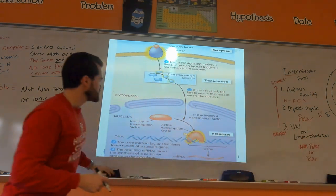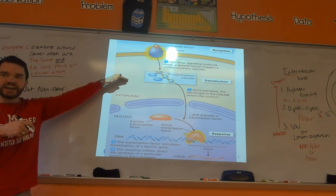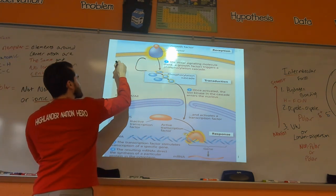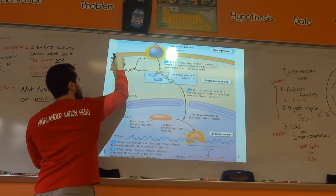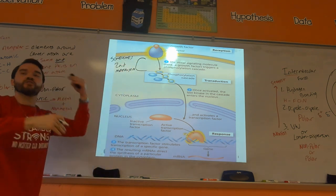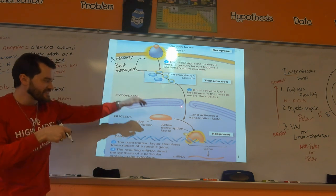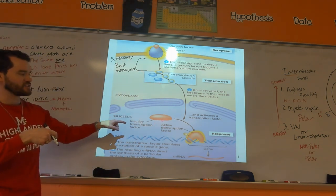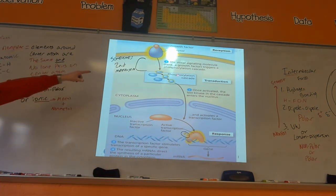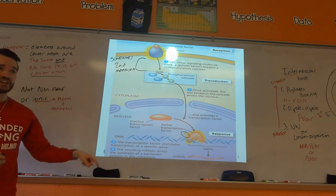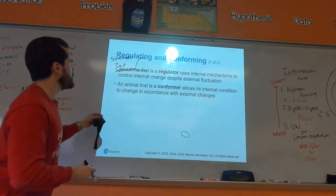Bringing it all together: a growth factor binds to a receptor, leading to a phosphorylation cascade — sometimes with second messengers inserted to further amplify the signal. The cascade activates a transcription factor, which has a phosphate group from the kinase. That transcription factor turns on specific genes to make the proteins needed for the cellular response.